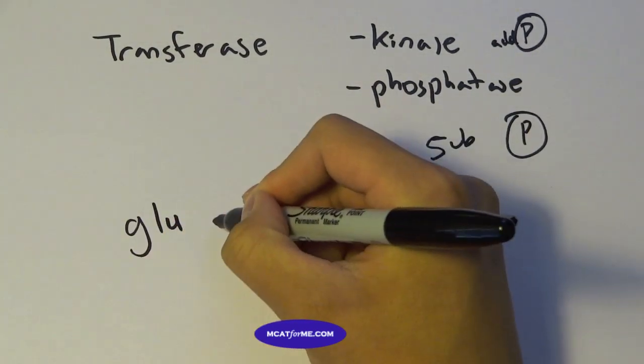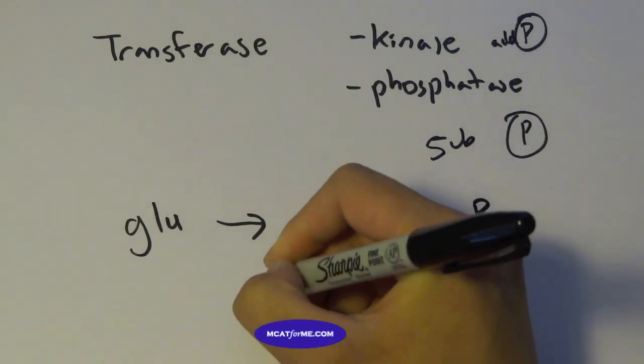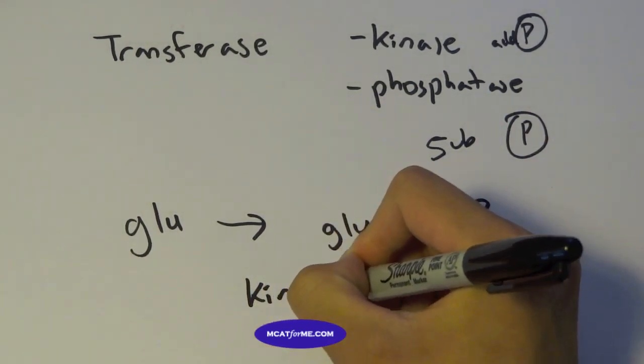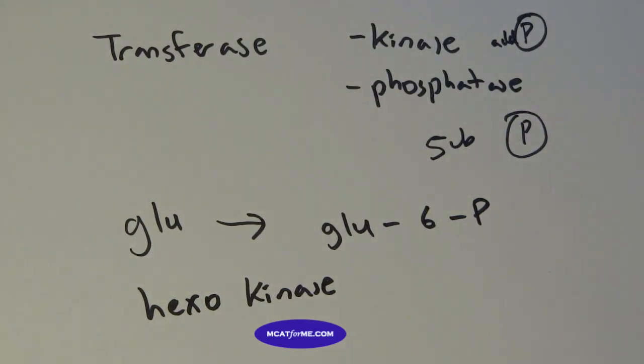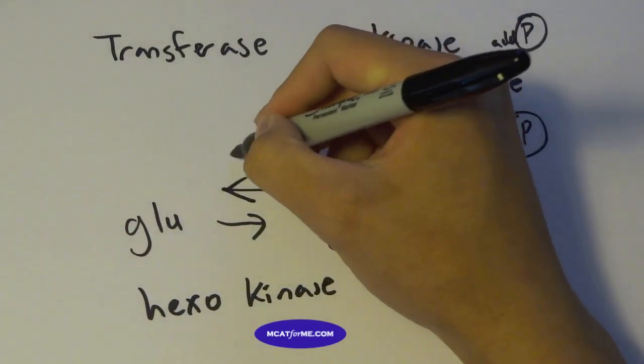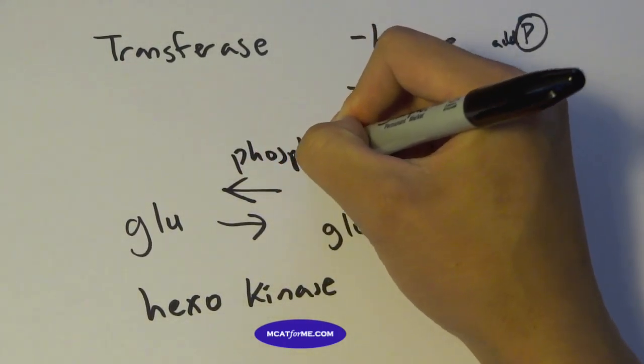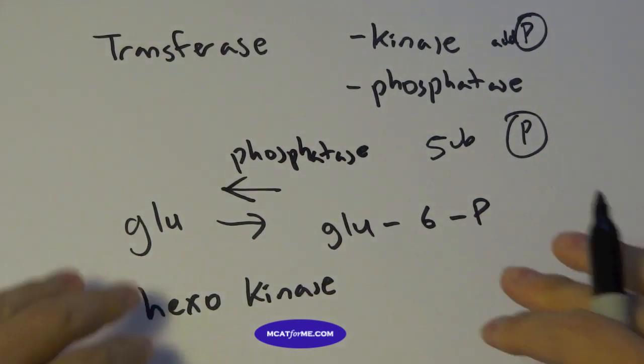And phosphatase subtracts a phosphate group. So for example, when we went from glucose to glucose-6-phosphate, this was a kinase. And if you're curious, it's hexokinase. And so if we want to go in the reverse reaction between glucose-6-phosphate to glucose, that would have been a phosphatase. So just know that distinction between the two and you'll be fine.